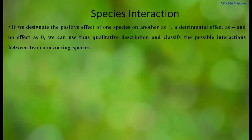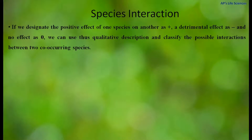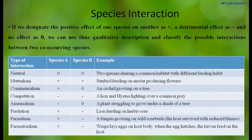Few species have positive interaction with each other, whereas few species have a negative or detrimental effect on another species, and few interactions have no effect between them. If we assign a plus sign as positive effect, negative sign as detrimental effect, and zero for no effect, then we can have different types of species interaction, such as neutral.